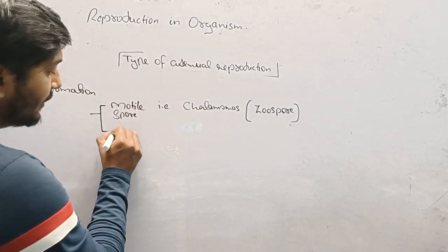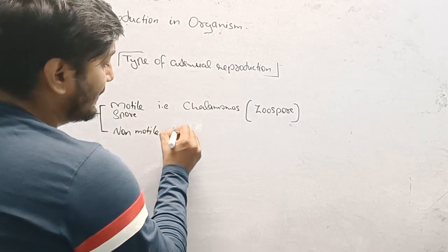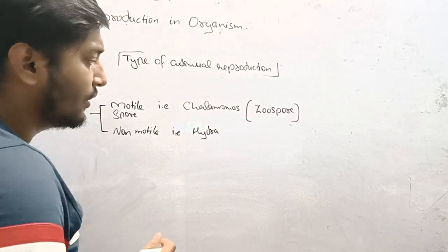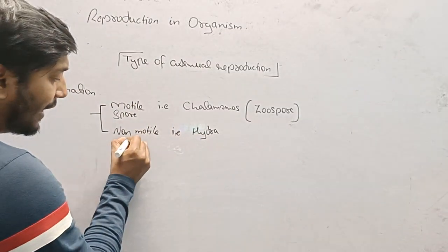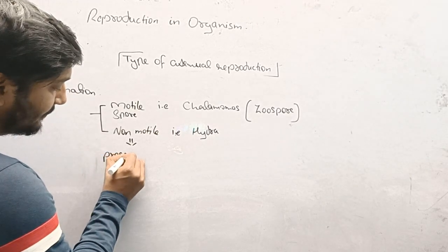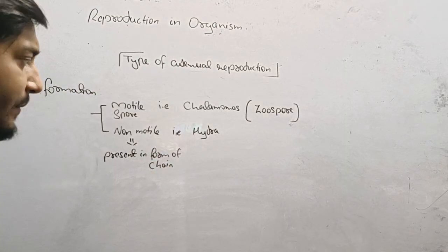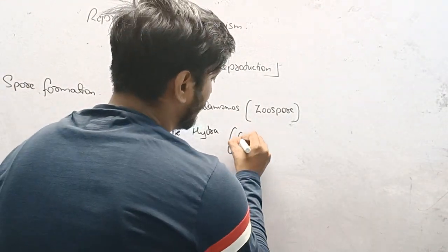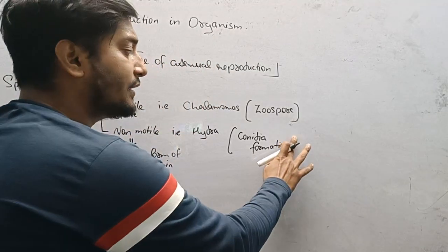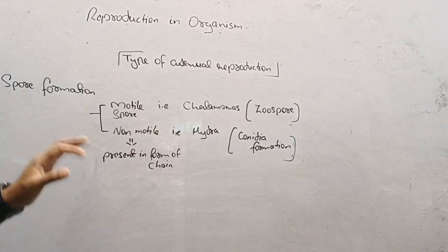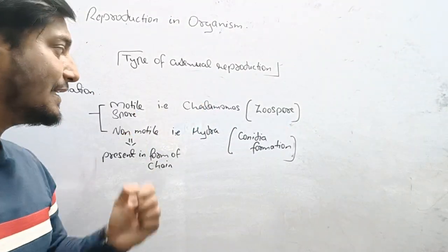If the spore is non-motile, and this is seen in some organisms, the spores are present in the form of a chain. This type of arrangement is known as conidia formation, and these spores are known as conidia spores. So to summarize: if the spore is motile, it is known as zoospores, with the example of Chlamydomonas.